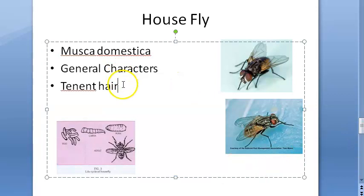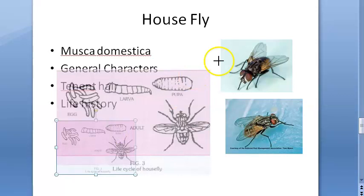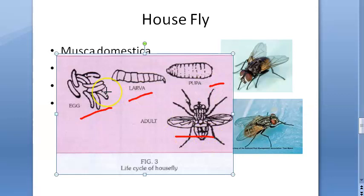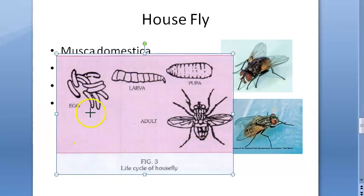Now coming to the life history of the house fly - the life cycle. The house fly undergoes complete metamorphosis with four stages: egg, larva (also called maggot), pupa, and adult. The female lays about 120 to 150 eggs in a single sitting on moist decaying organic matter like human excreta, animal excreta, manure, garbage, or vegetable refuse. The eggs are pearly white.